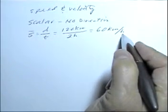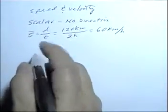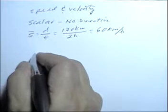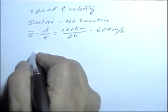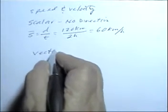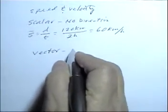Well, that's speed - average speed. Now let's take a look at velocity. Velocity is not a scalar quantity. Velocity is a vector quantity. It's a vector quantity because it does have a